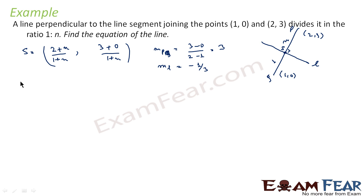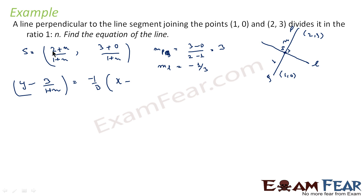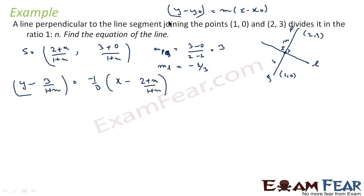So we have a point and we have the slope. Now since we have the point S = ((2+n)/(1+n), 3/(1+n)) and slope m = −1/3, we can find the equation. The equation is y − y₀ = m(x − x₀), where y₀ = 3/(1+n), m = −1/3, and x₀ = (2+n)/(1+n). This formula y − y₀ = m(x − x₀) is what we have used.